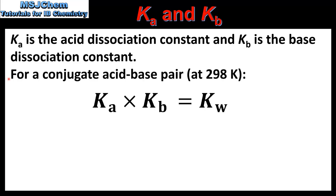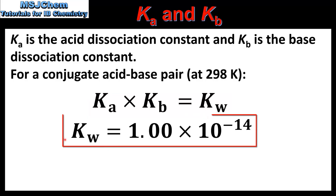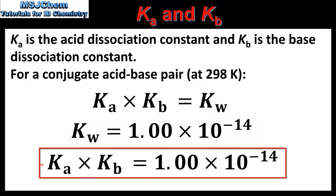For a conjugate acid-base pair we have the following relationship: Ka multiplied by Kb is equal to Kw. At a temperature of 298K the value of Kw is 1.00×10⁻¹⁴. Therefore for a conjugate acid-base pair at 298K, Ka multiplied by Kb is equal to 1.00×10⁻¹⁴.